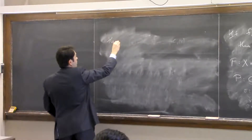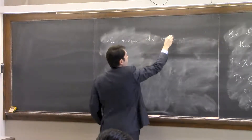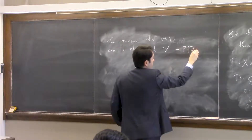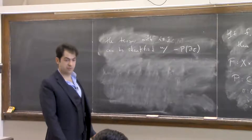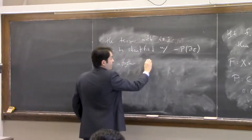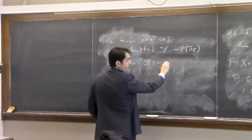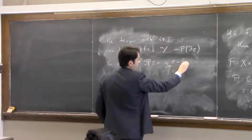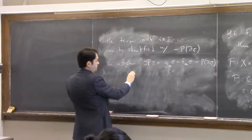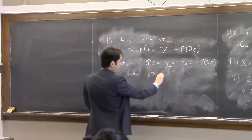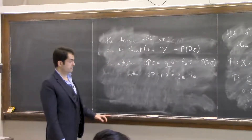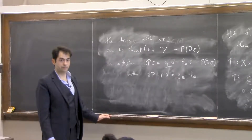The terms with i different from j can be identified with -P(∂sigma). Altogether, the boundary of P(sigma) equals g_sharp(sigma) - f_sharp(sigma) - P(∂sigma), or equivalently: ∂P + P∂ = g_sharp - f_sharp.